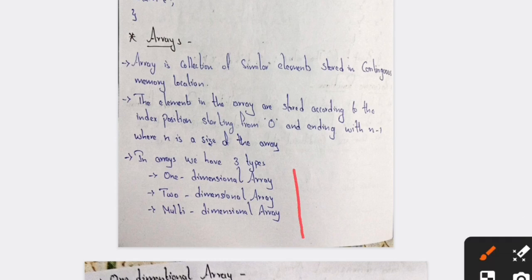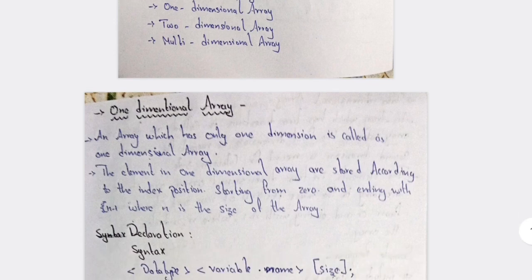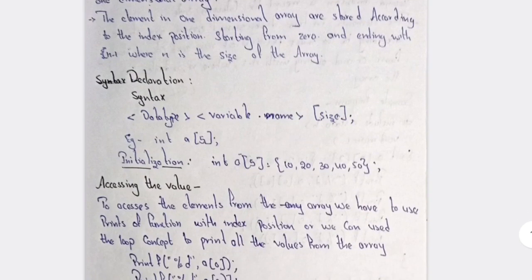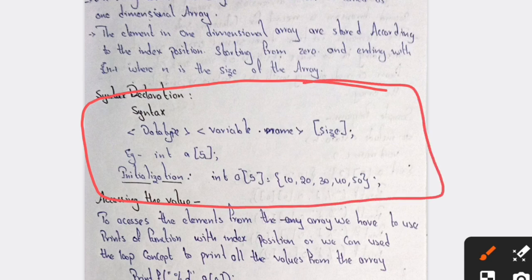In arrays you will have three types: one-dimensional, two-dimensional, and multi-dimensional. One-dimensional array stores values according to position — according to the position we are storing the value, that is called a one-dimensional array. You need to remember the syntax for this.